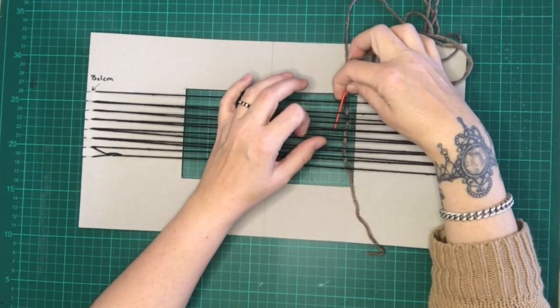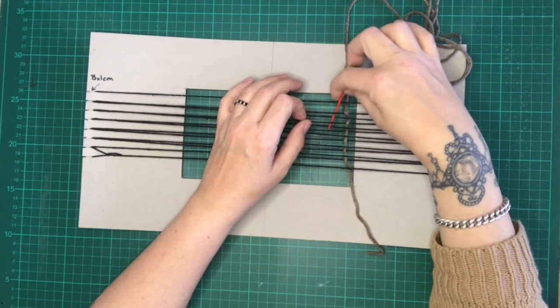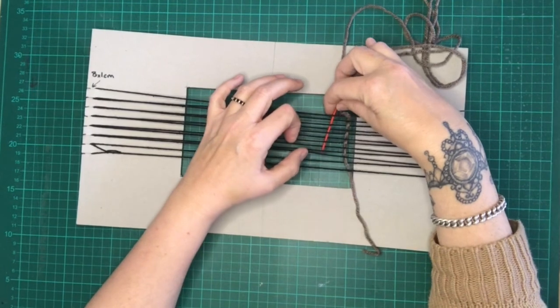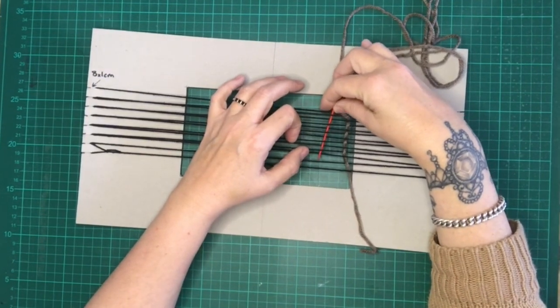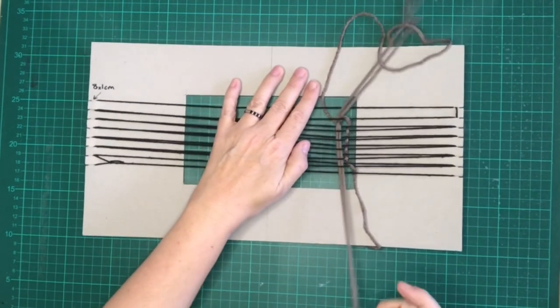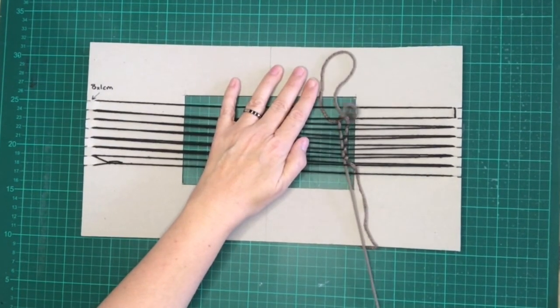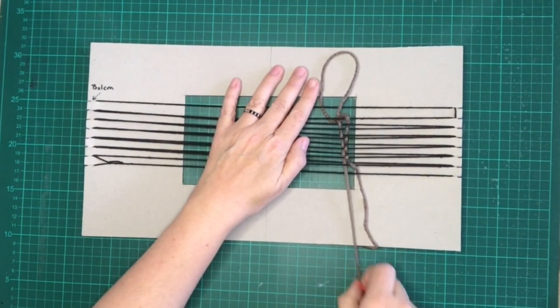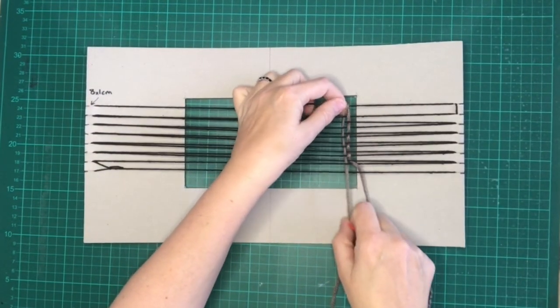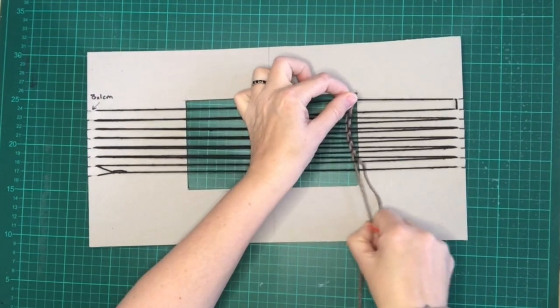Now going back through, alternate the opposite thread over and under. As you guide the wool through on this second row, the tension is going to be really important. Don't leave it too loose or too tight.